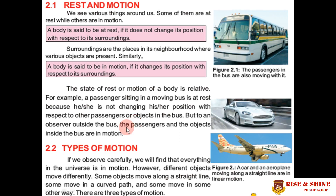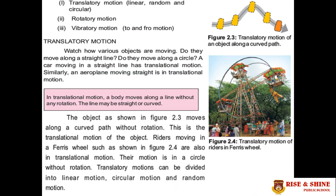Now, different objects have different types of motion. There are basically three types of motion: first is translatory motion, second is rotatory motion, and third is vibratory motion. Translatory motion has further three types: linear motion, random motion, and circular motion.